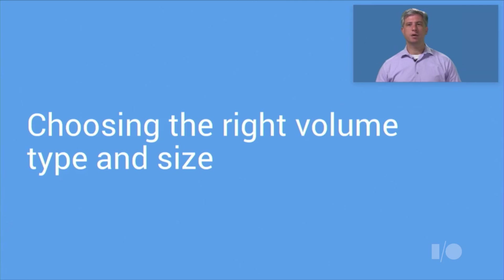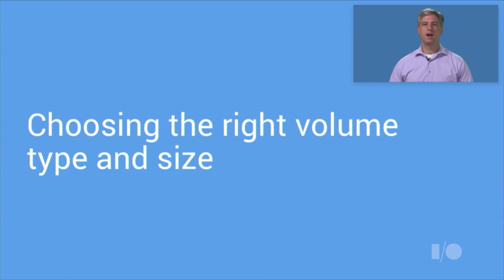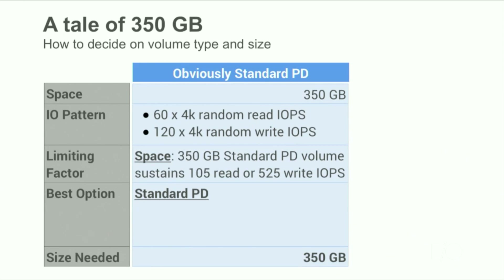Now I'd like to help you with the most important decisions in implementing block storage. Given the three options, how do you decide which to use for which app, and how large do you need to make the volumes to get the performance you need? I will walk through four separate examples. In the first example, we have 300 gigabytes of space and a fairly modest amount of IO — 60 random reads per second and 120 random writes per second. Simply 350 gigabytes of standard persistent disk will do the trick nicely: very economical cost and gives you all the IO you need with some to spare.